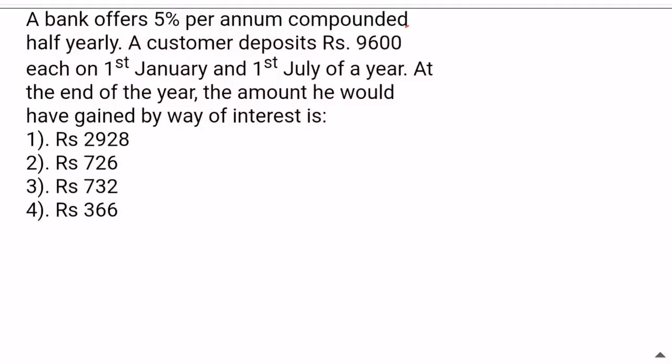This is the first thing about compound interest. The problem is that a bank offers over 5% per annum compounded.